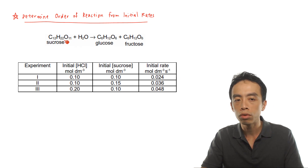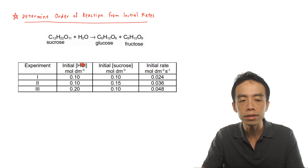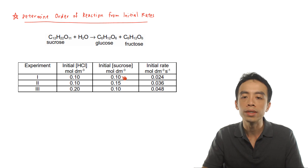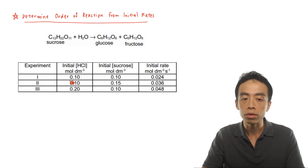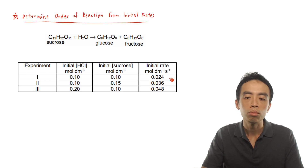Let us have an example to illustrate how to determine the order of the reaction using the initial rate method. We have this example involving the reaction between sucrose and water to give glucose and fructose. Given three different experiments where we vary the concentration of HCl, which is the catalyst, and the concentration of sucrose: in experiment 1, the concentration of HCl is 0.1 mol/dm³, sucrose concentration is also 0.1 mol/dm³, and the initial rate is 0.024 mol/dm³/s. In experiment 2, the concentration of HCl remains 0.1 mol/dm³, but sucrose changes to 0.15 mol/dm³, and the initial rate changes to 0.036 mol/dm³/s.